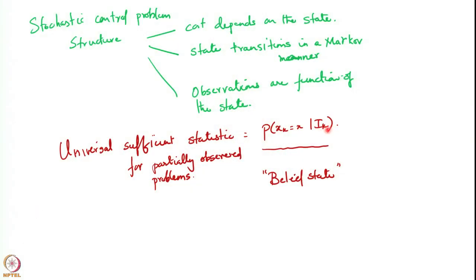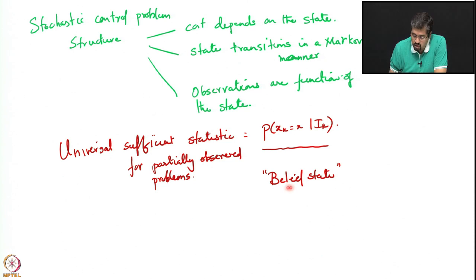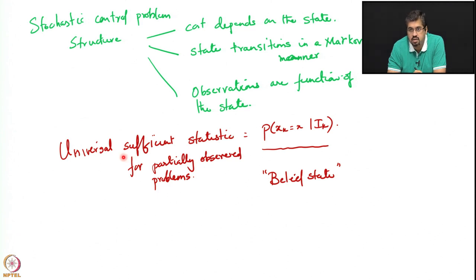Welcome everyone. In our previous lecture, we argued that the universal sufficient statistic for partially observed problems — problems where we do not have perfect information about the state — is the conditional distribution of the state given the information. This is what we call the belief state. The reason this was universal is because it works for every stochastic control problem, regardless of whether it has linear or nonlinear dynamics, or a quadratic cost or some other cost.